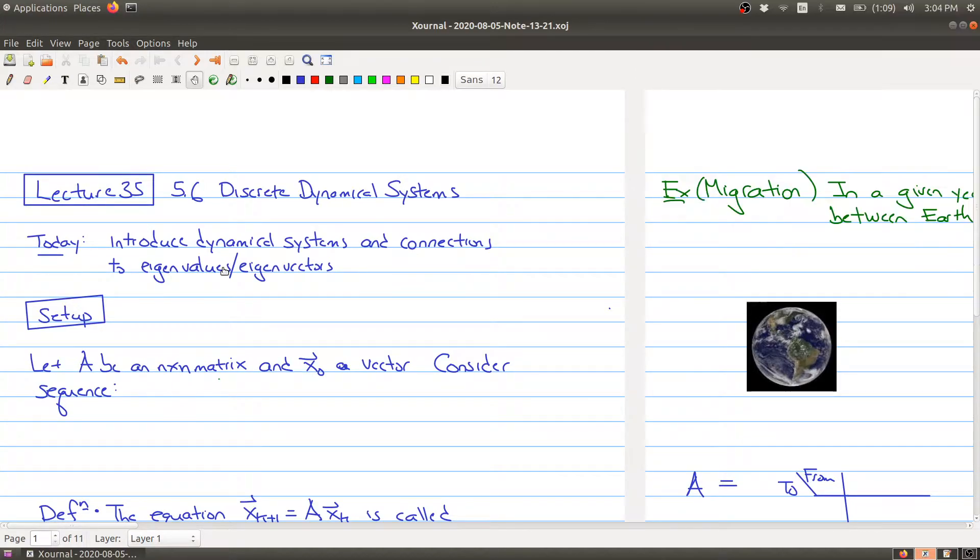Here's the setup. We have a square matrix, an n by n matrix, and some vector x_0. x_0 has particular values and we consider the sequence of vectors: x_1 equals A times x_0, x_2 equals A times x_1, and we keep doing this. So x_3 equals A times x_2, and so on. The (k+1)th vector is the vector we get when we multiply the kth vector by the matrix A.